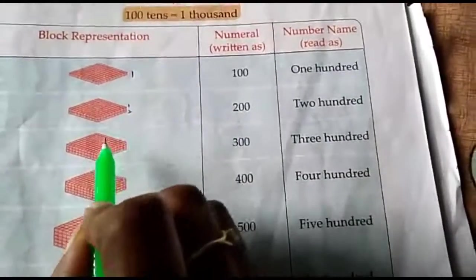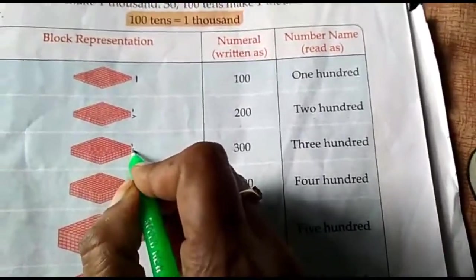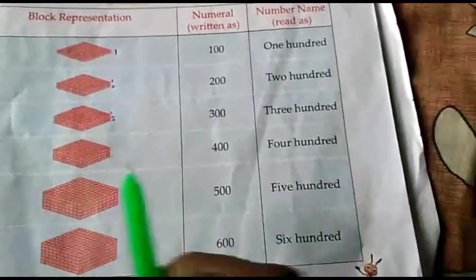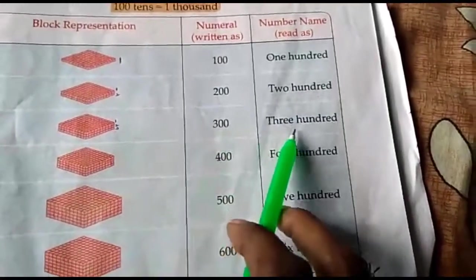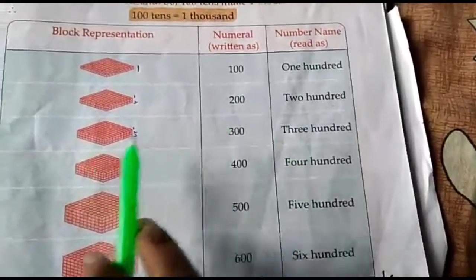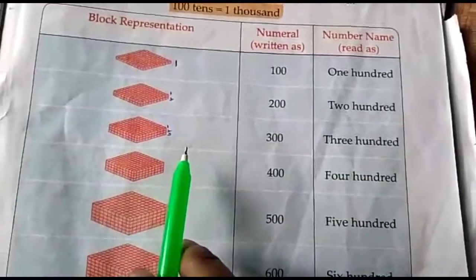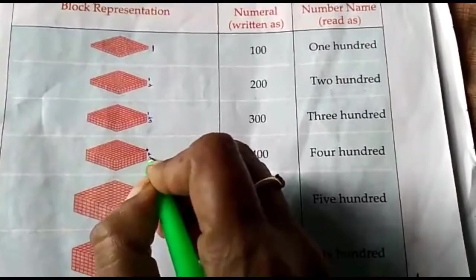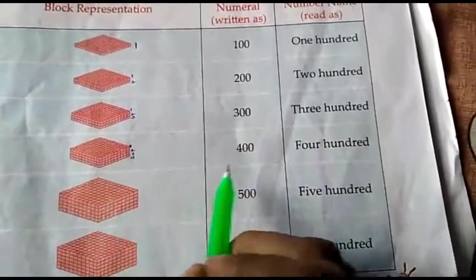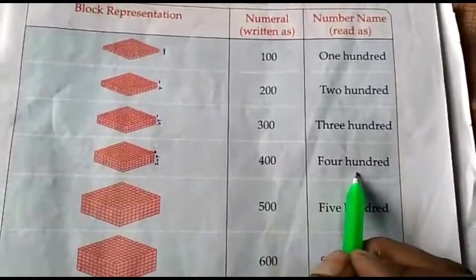Next. Here. Three hundred boxes are there. One, two, three. So, three hundred. Three hundred spelling. Next. Four hundred. One, two, three, four. Four hundred. Four hundred spelling.